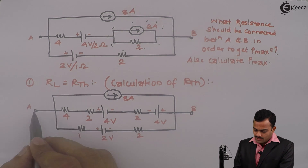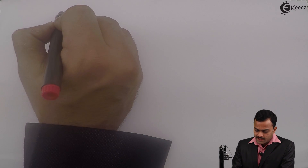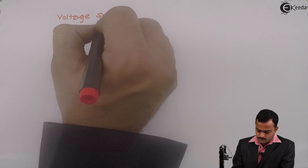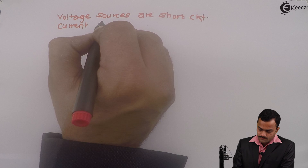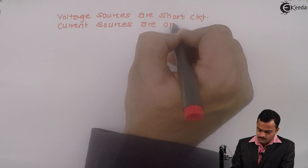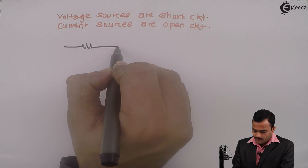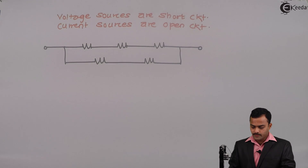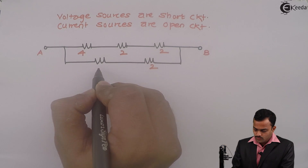Our job is to get RTH, which is the resistance between points A and B. What we need to do? We need to do 3 things: one is open circuit RL — but here RL is not given, it is already open. Voltage sources are short circuited. Current sources are open circuited. So I will get a circuit having resistances only. Between A and B points I will have resistances of 4 ohm, 2 ohm, 2, 2, and 1.